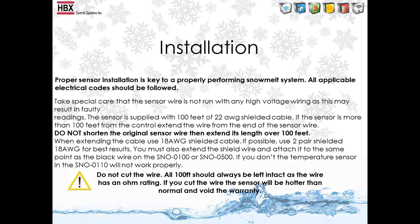Next, we will talk about the installation of the optical snowmelt sensor. The most important thing to keep in mind is not to cut the included 100-foot cable, as this will change the resistance in the control and it will not operate properly. If more than 100 feet is needed, you can extend the cable using two-pair shielded 18-gauge cable up to 200 feet in total length.